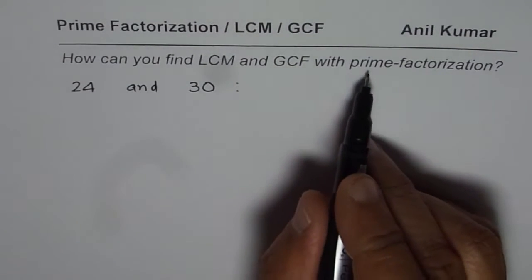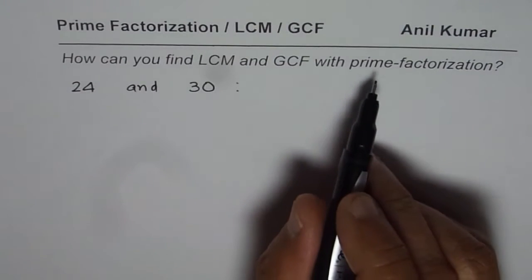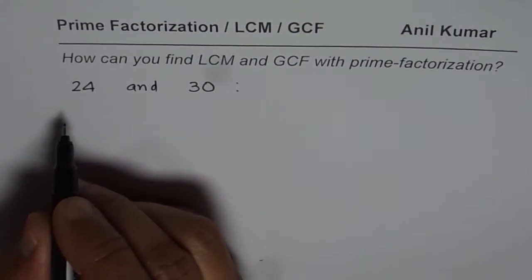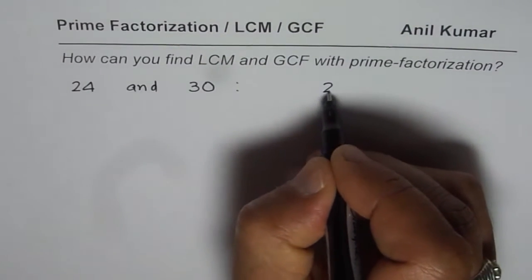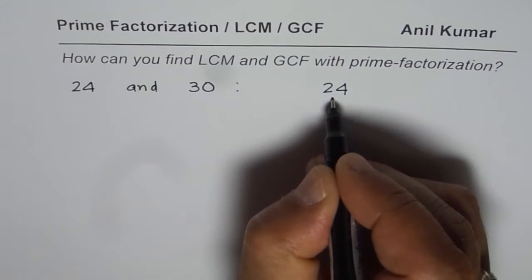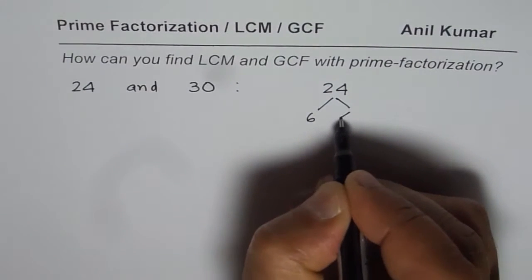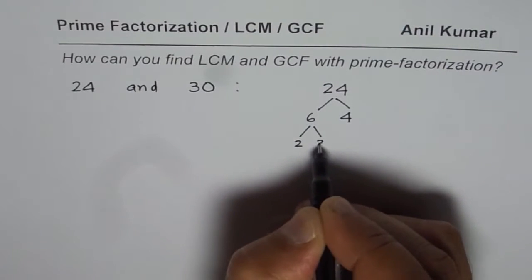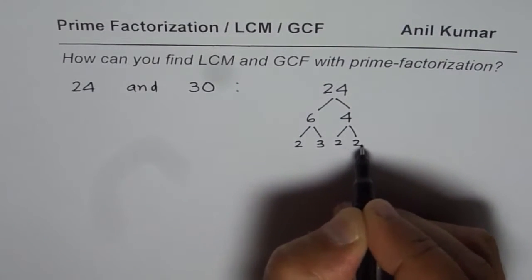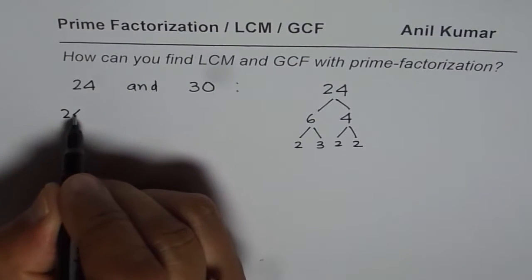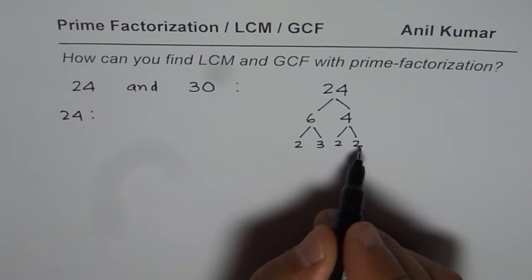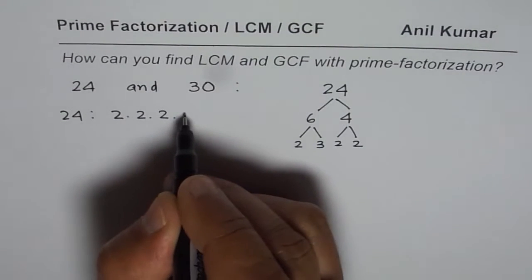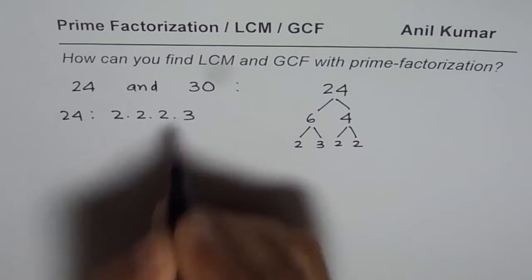Since the method is prime factorization, let us first do prime factorization of 24 and 30. So for 24, you could have 6 times 4 is 24. And 6 could be written as 2 times 3, and 4 is 2 times 2. So prime factorization of 24 could be written as 2 times 2 times 2 times 3. It is good to write them in order from least to greatest — it helps.